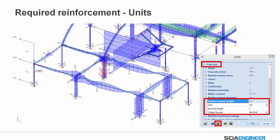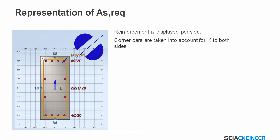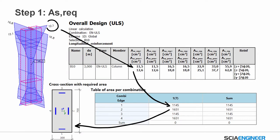Here you can see an image of the design of reinforcement. It is possible to change the units — in this case it is in square meters, but you can change it as a user and save it so it's also changed for each project. The reinforcement is displayed per side of the cross-section, and the corner bars are taken into account — half to both sides. When you do the reinforcement design and ask for the required reinforcement, you get a value for required reinforcement, but you can also ask for the provided reinforcement.